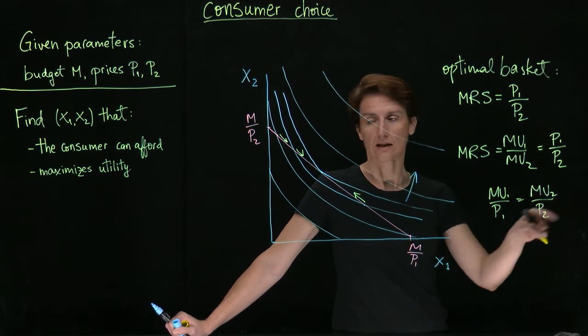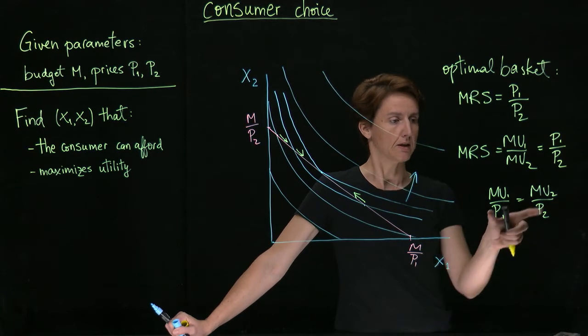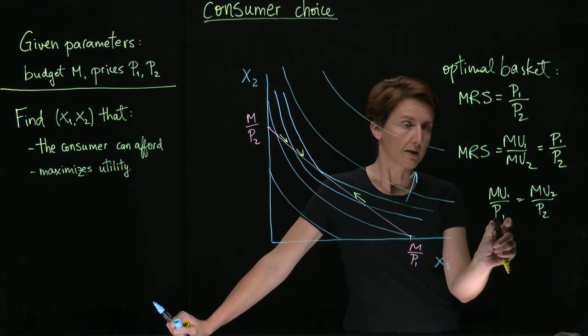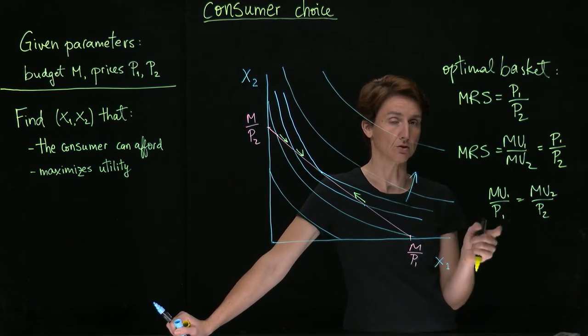And so if we're at the optimal basket where we can't improve any further, we're finding that the marginal utility per dollar spent on good one has to equal the marginal utility per dollar spent on good two.